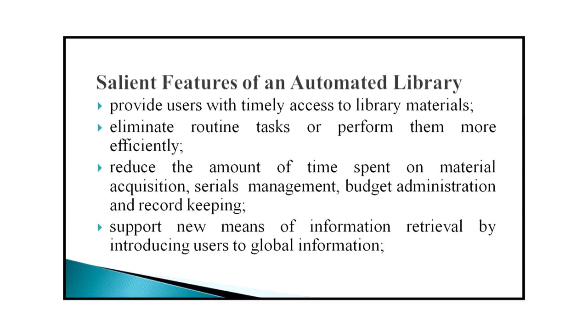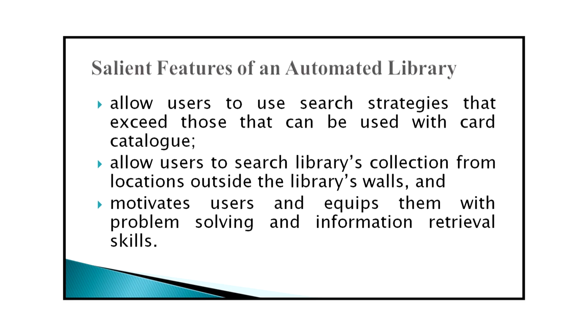The salient features of an automated library include: it provides users with timely access to library material, eliminates routine tasks, reduces time spent on material acquisition and serials management, supports new means of information retrieval by introducing users to global information, allows users to use search strategies beyond those possible with card catalogs, allows users to search the library collection from outside the four walls of the library, and motivates users while equipping them with problem-solving and information retrieval skills.